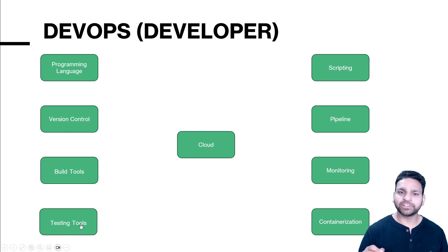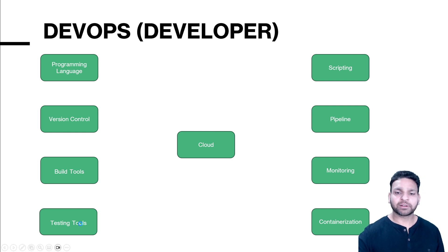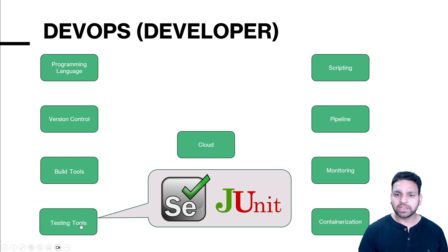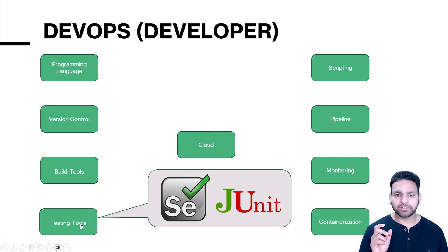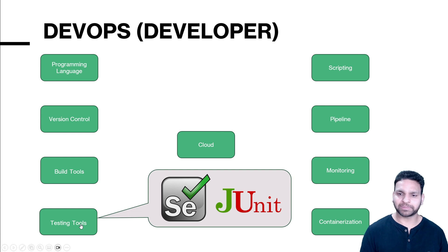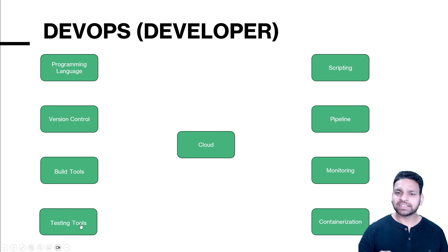Then comes the testing tools, because you cannot deploy code directly into production before testing it. There are multiple testing tools like Selenium for automation testing, JUnit, and many others. Pick one tool and become good at it, so that when you want to integrate it you can do so easily with your CI/CD pipeline.